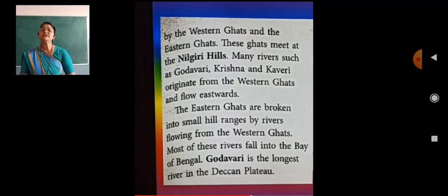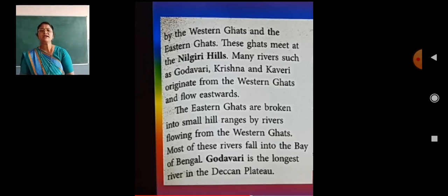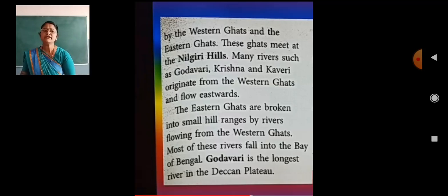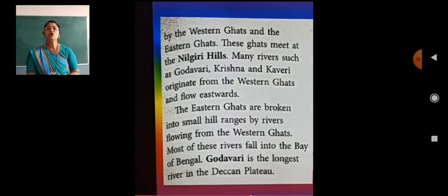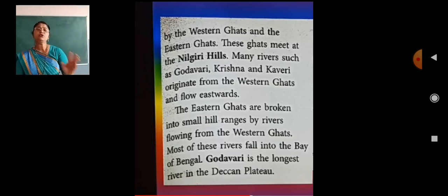To recap: the Eastern Ghats and Western Ghats both meet at Nilgiri Hills. Rivers such as Godavari, Krishna and Kaveri originate from the Western Ghats and flow eastward. The Eastern Ghats are broken into small hill ranges by these rivers. Most of these rivers fall into the Bay of Bengal, and Godavari is the longest river in the Deccan Plateau.